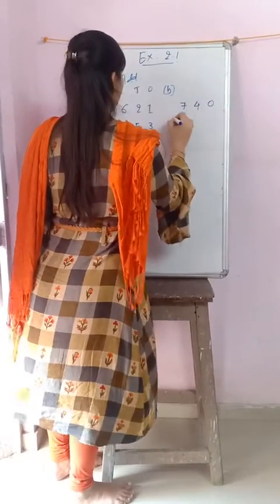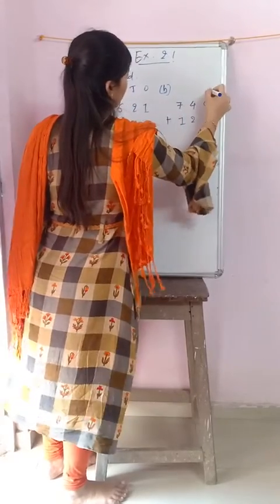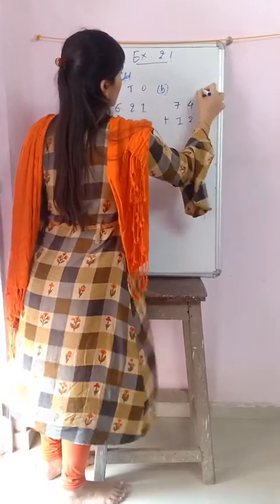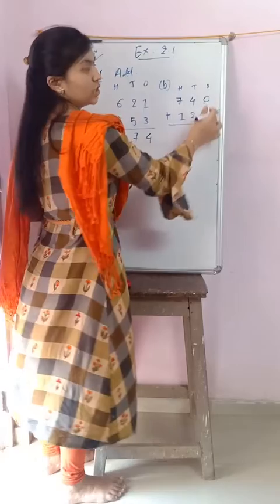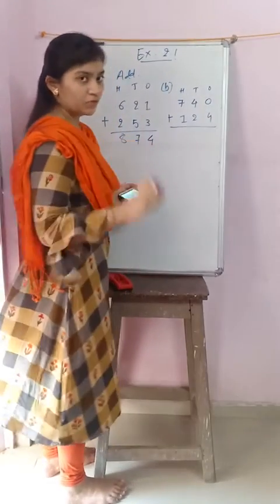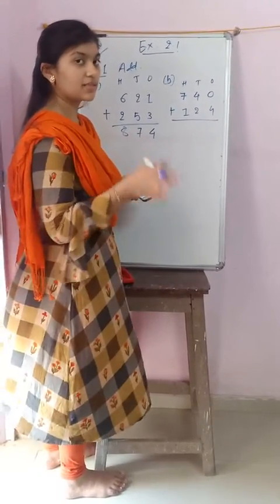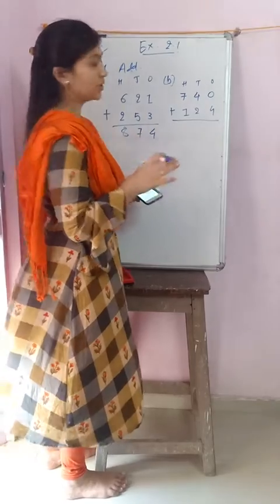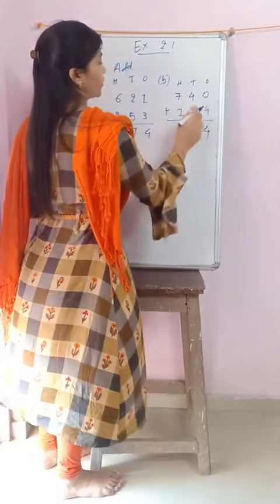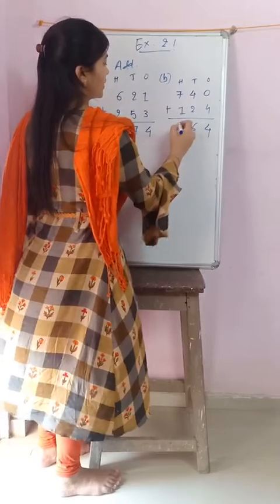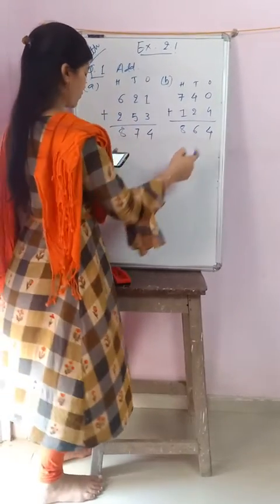Now I am solving b: 740 plus 124. Ones, tens, hundreds. Zero plus four — if you add zero with any number, the answer is that number — so zero plus four equals four. Four plus two equals six, seven plus one equals eight. The answer is 864.